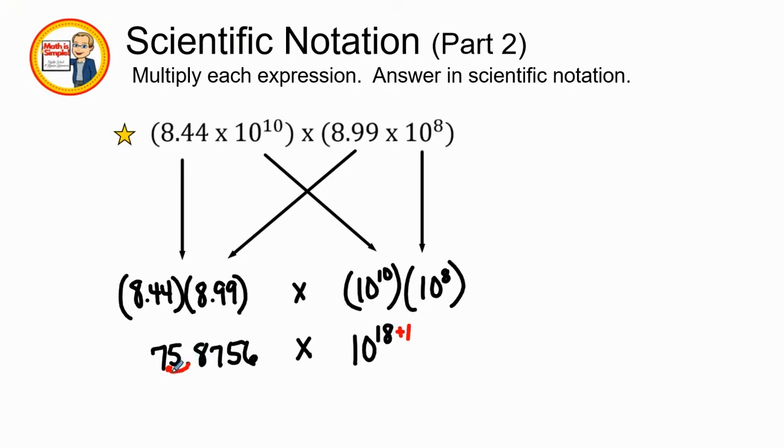So when we make the number smaller, the exponent grows. If I moved over two spaces, I would increase my exponent by two. In this case, we have our final answer of 7.58756 times 10 to the 19th power.